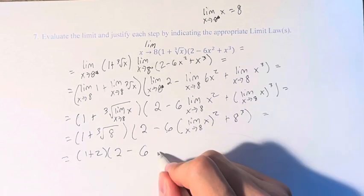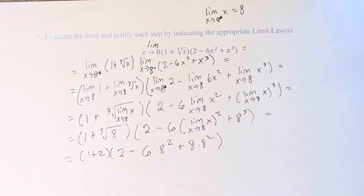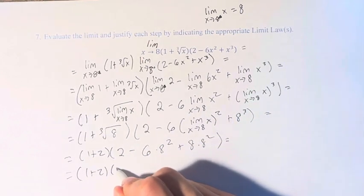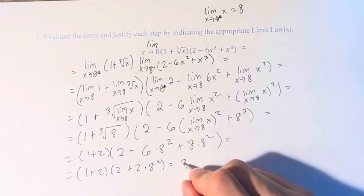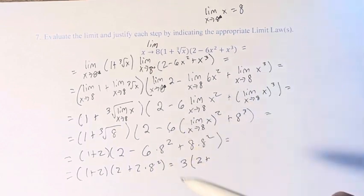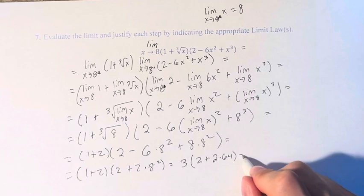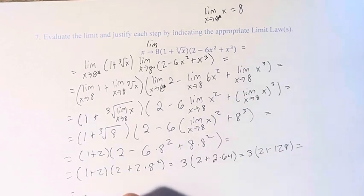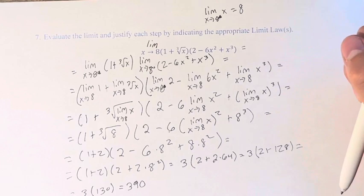Sorry — squared, so this is 6 times 8 squared. We write 8 cubed as 8 times 8 squared, so we have 8 times 8 squared minus 6 times 8 squared. 8 minus 6 is 2, times 8 squared — I'm doing that so I can do this math in my head. 1 plus 2 is 3, and 2 times 64 is 128, so 3 times 130 is 390. The limit as x approaches 8 equals 390.